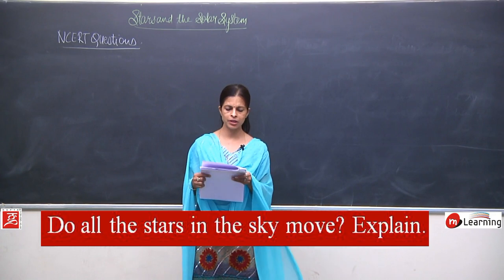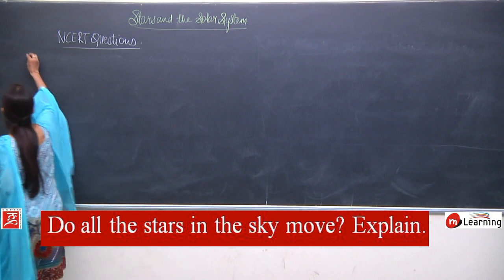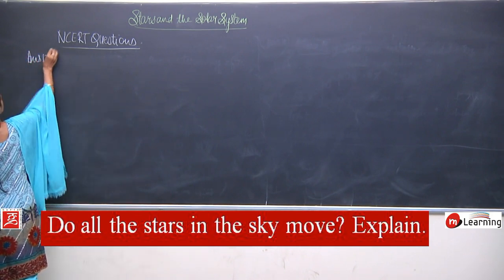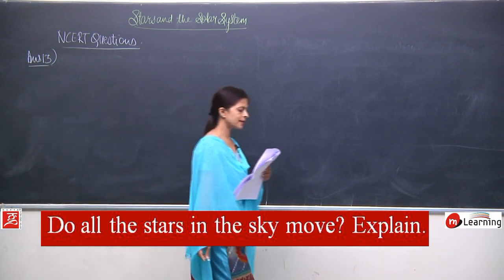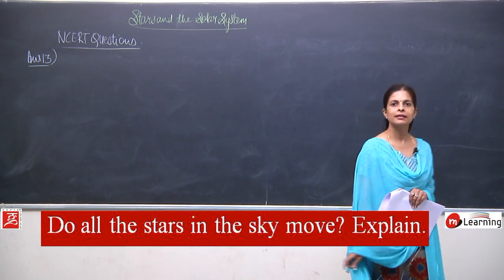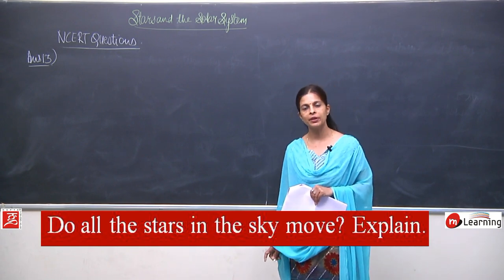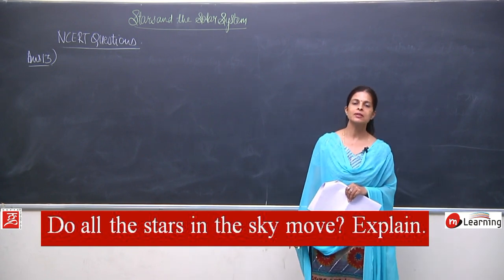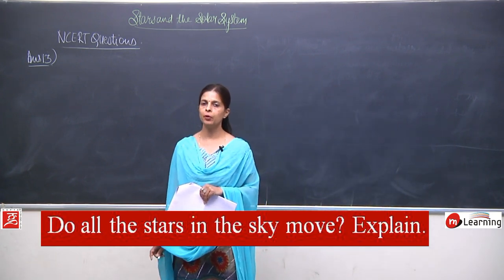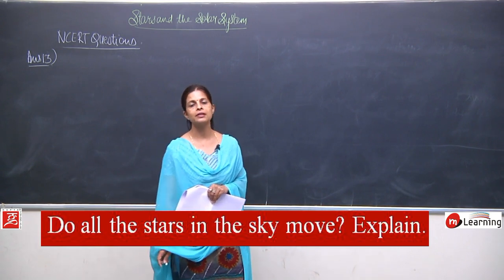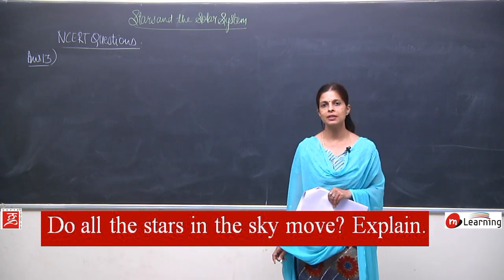We will talk about question number 13. The question is: do all these stars in the sky move? We have discussed that the earth is moving from west to east, and that is the reason it appears that these stars are moving from east to west. But in the case of the Pole Star, as it is just above the axis of rotation of the earth in the northern sky, it does not seem to move — it seems to be stationary.